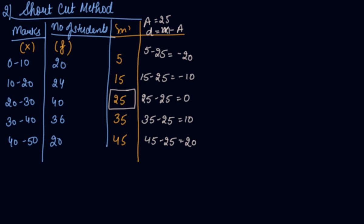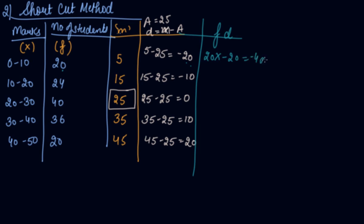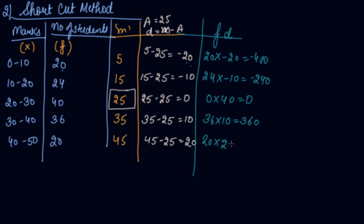Now multiply each deviation by its frequency to get F×D: 20×(−20) = −400, 24×(−10) = −240, 40×0 = 0, 36×10 = 360, and 20×20 = 400. The +400 and −400 cancel out, leaving 360 − 240 = 120. So ΣFD = 120.